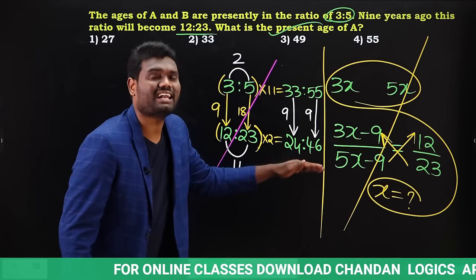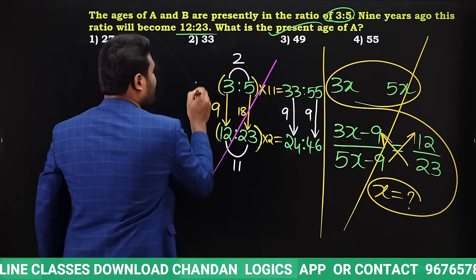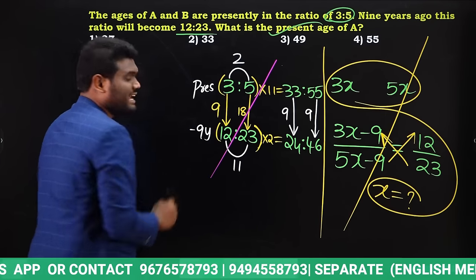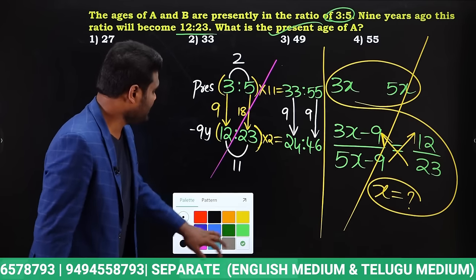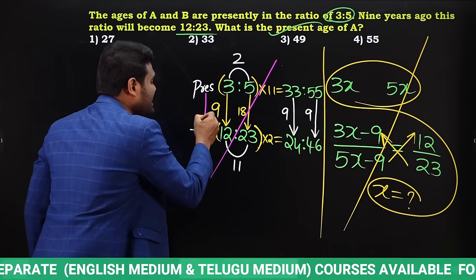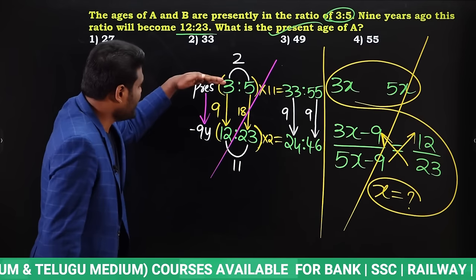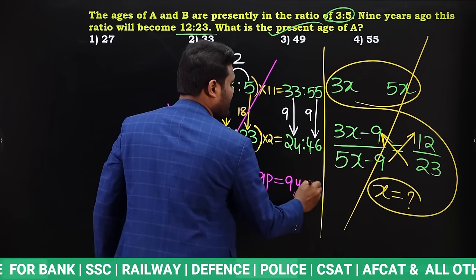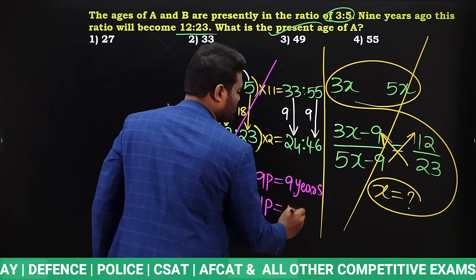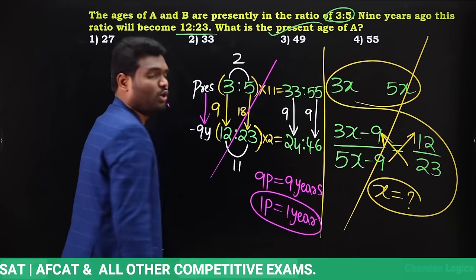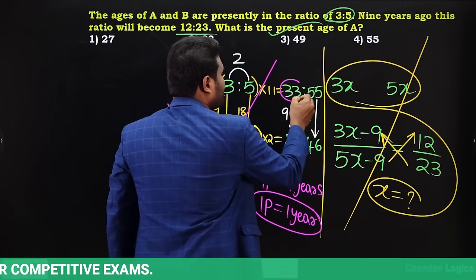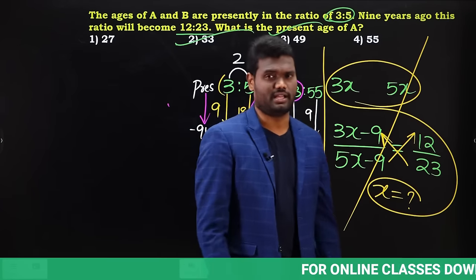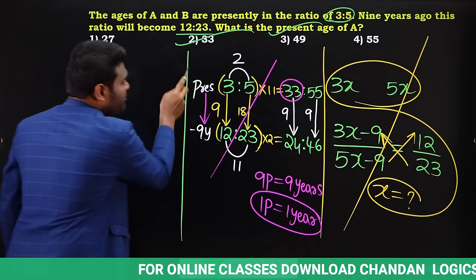The present ratio gives 33 parts and the 9-years-ago ratio gives 24 parts, so the difference is 9 parts. This difference corresponds to 9 years, meaning 1 part equals 1 year. The present age of A is 33 parts, so A's present age is 33 years.